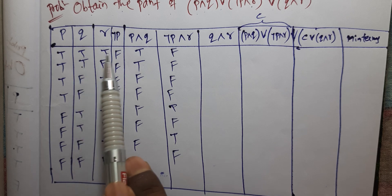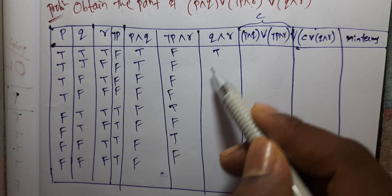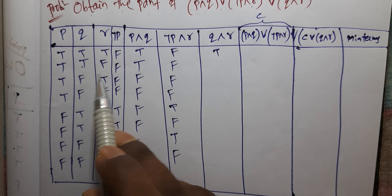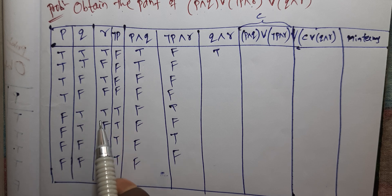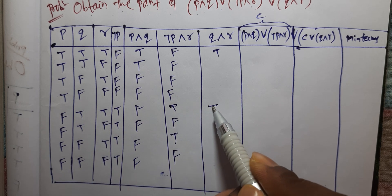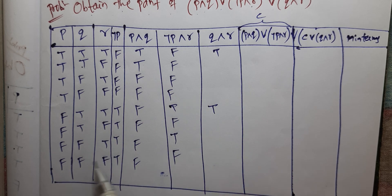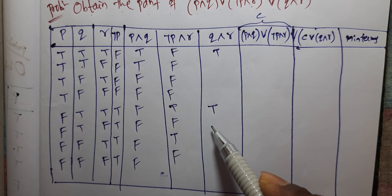Q and R — any two statements true gives true. True, true, true.